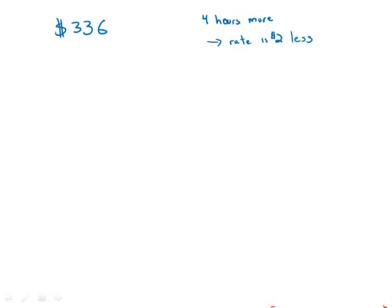At a regular hourly rate, Don had estimated the labor cost of a repair job at $336 and he was paid that amount. However, the job took four hours longer than he had estimated, and consequently he earned $2 per hour less than his regular hourly rate. What was the time Don had estimated for the job in hours?